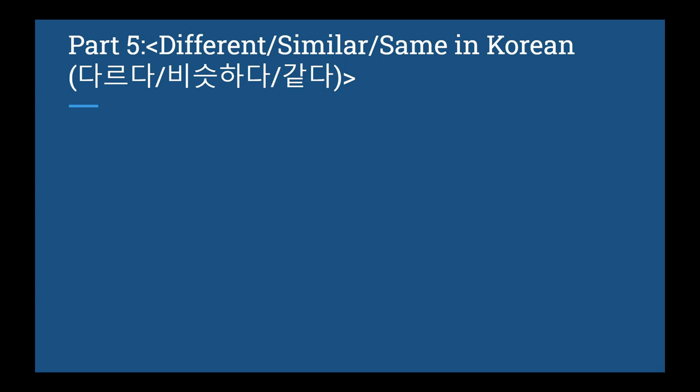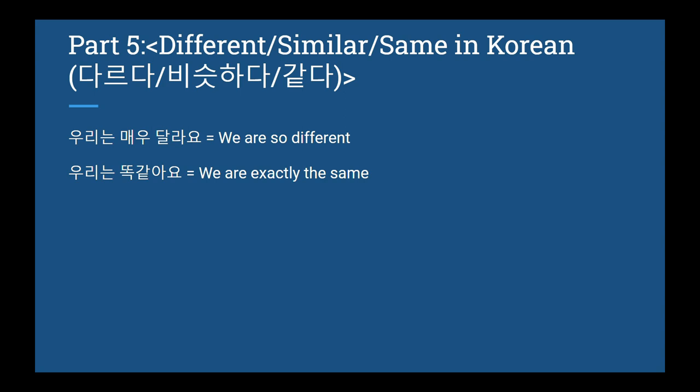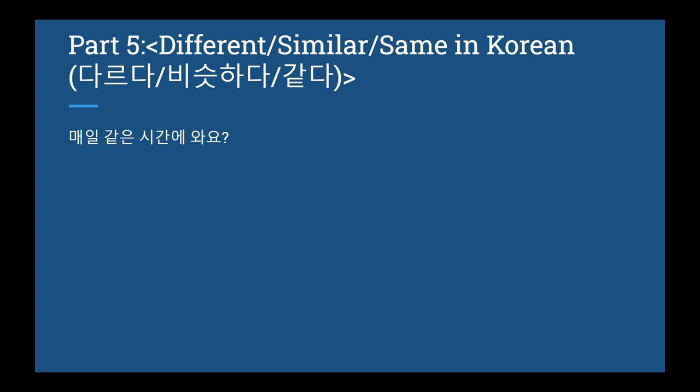Let's look at these three comparison words — we actually learned these in the vocab section of previous lessons, but I wanted to compare them to really understand the differences. 우리는 매우 달라요 — we're very different. 우리는 똑같아요 — we're exactly the same. 우리는 비슷해요 — we are similar. Quick anecdote: when I went to Korea, there was a 7-11 right next to where I was staying, and I'd get back around midnight. The cashier recognized me and asked 매일 같은 시간에 와요? — 'Do you come at the same time every day?' So 같은 means 'same.'